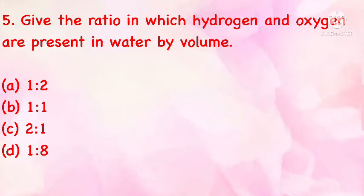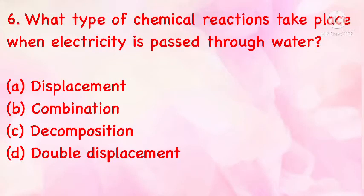Give the ratio in which hydrogen and oxygen are present in water by volume: (a) 1:2, (b) 1:1, (c) 2:1, (d) 1:8. The correct answer is (a): 1:2. What type of chemical reaction takes place when electricity is passed through water?